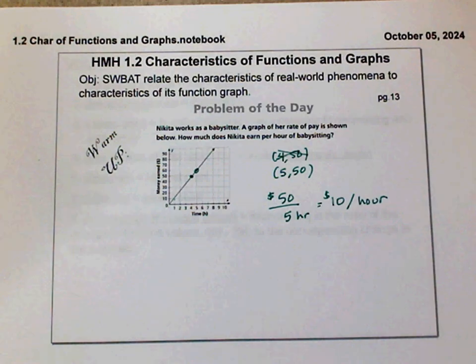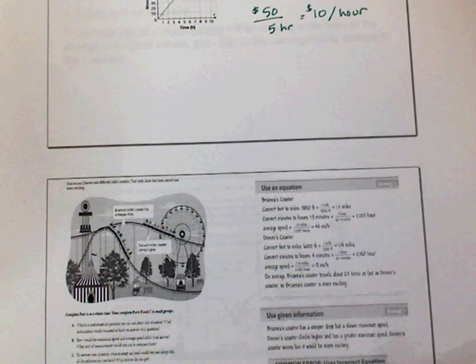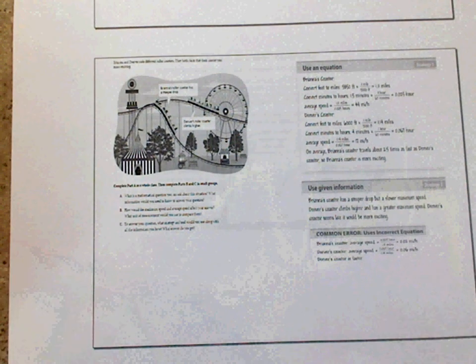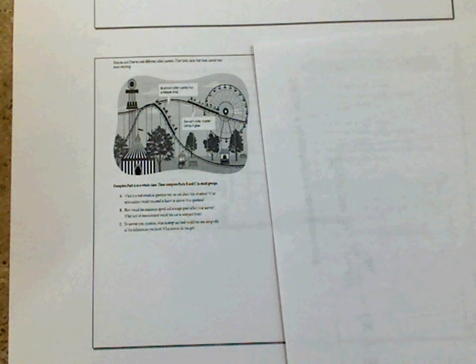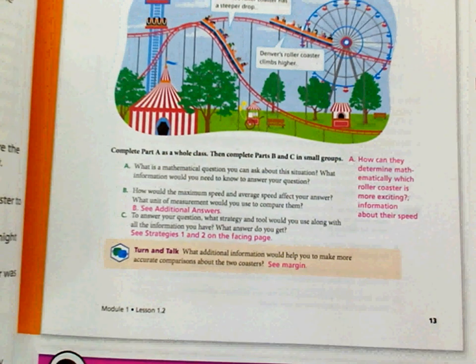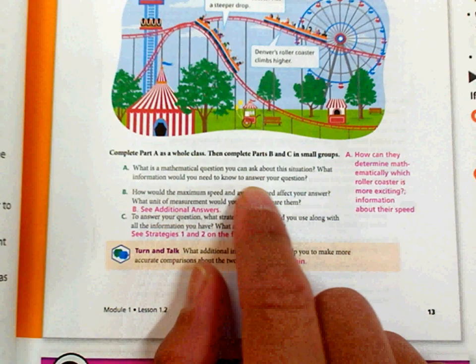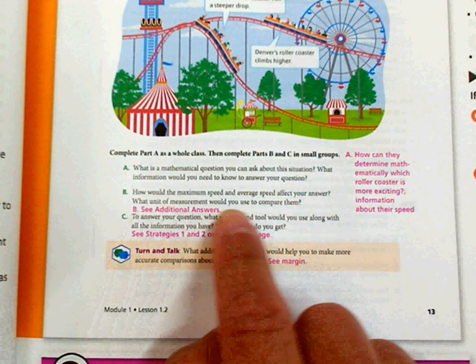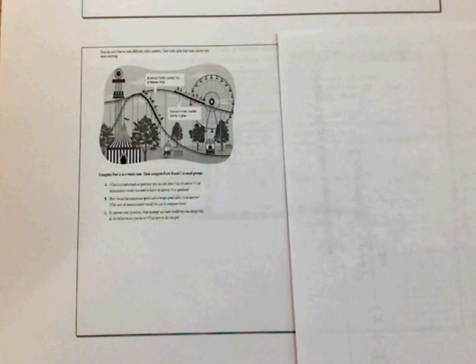If you have a hard time reading any of this, please go to your textbook. This is on page 13, and this is where we are starting right now. Complete part A. What is a mathematical question you can ask about this situation? What information would you need to know to answer your question? How would the maximum speed and average speed affect your answer? What unit measure would you use to compare them? Those are things you can kind of ask yourself. But my question is this.